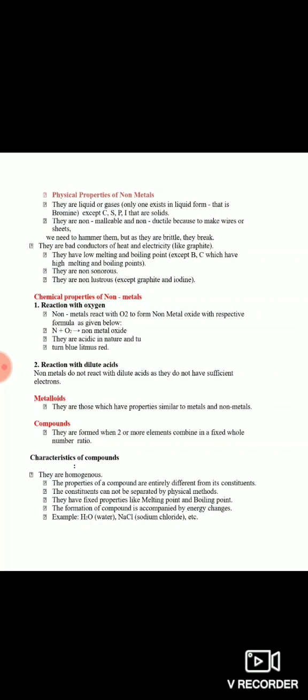Elements ki pehli category thi metals, doosri thi non-metals, third hai metalloids. Metalloids matlab woh elements jo metals ki properties bhi show karte hain aur non-metals ki bhi. Ab tak humne discuss kiya ki pure substances ko hum do categories mein divide karte the - pehli thi element, doosri kaunsi thi - compound. Ab hum compound ko discuss karenge.